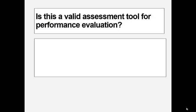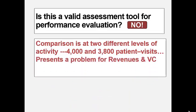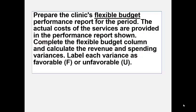So then we ask: is this a valid assessment? The answer is no. When you compare the columns at two different levels of activity — one at 4,000 patients and one at 3,800 patients — you're not really comparing numbers that are the same. It's especially a problem for revenues and variable costs. Fixed costs should not change just because of volume, but both revenues and variable costs should. So there is a better way. We looked at the static budget compared to actual results to demonstrate that it is problematic and not the way we should prepare a performance report for performance evaluation purposes.